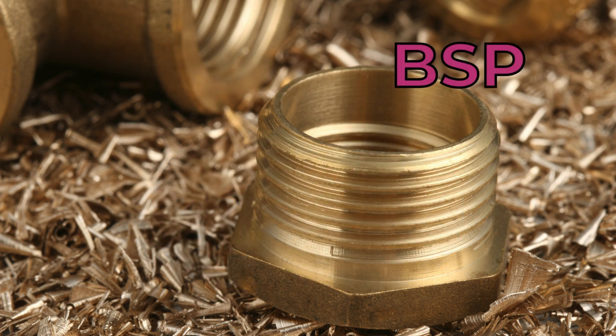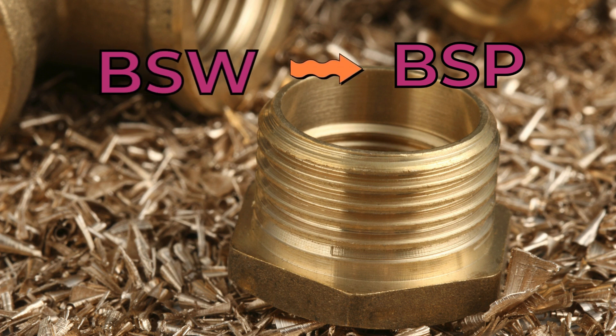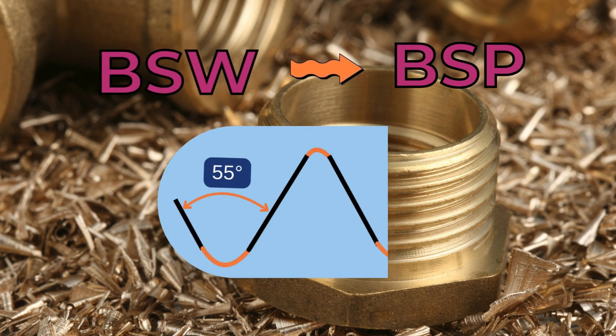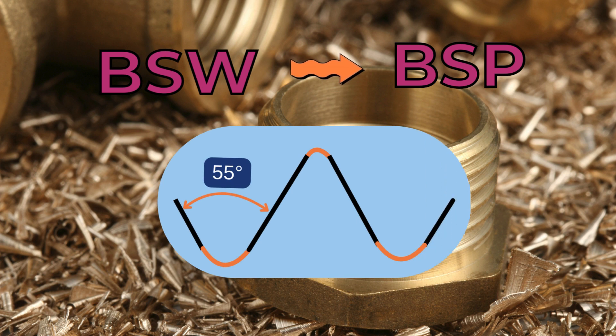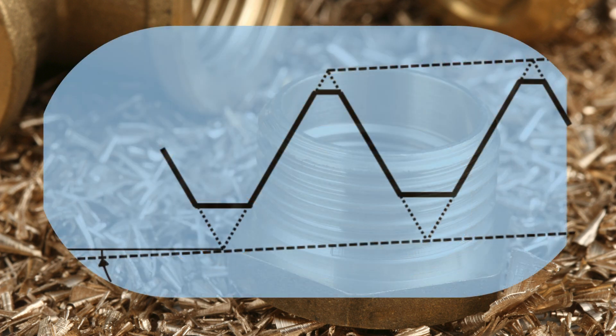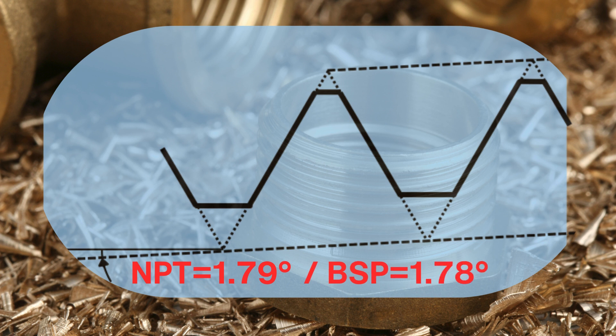On the other hand, BSP is based on the Whitworth standard, thus it features a 55-degree profile angle with rounded truncations. The tapered angle is nearly identical, with NPT threads at 1.79 degrees and BSP at 1.78, which hints that Sellers might have copied it from Whitworth.